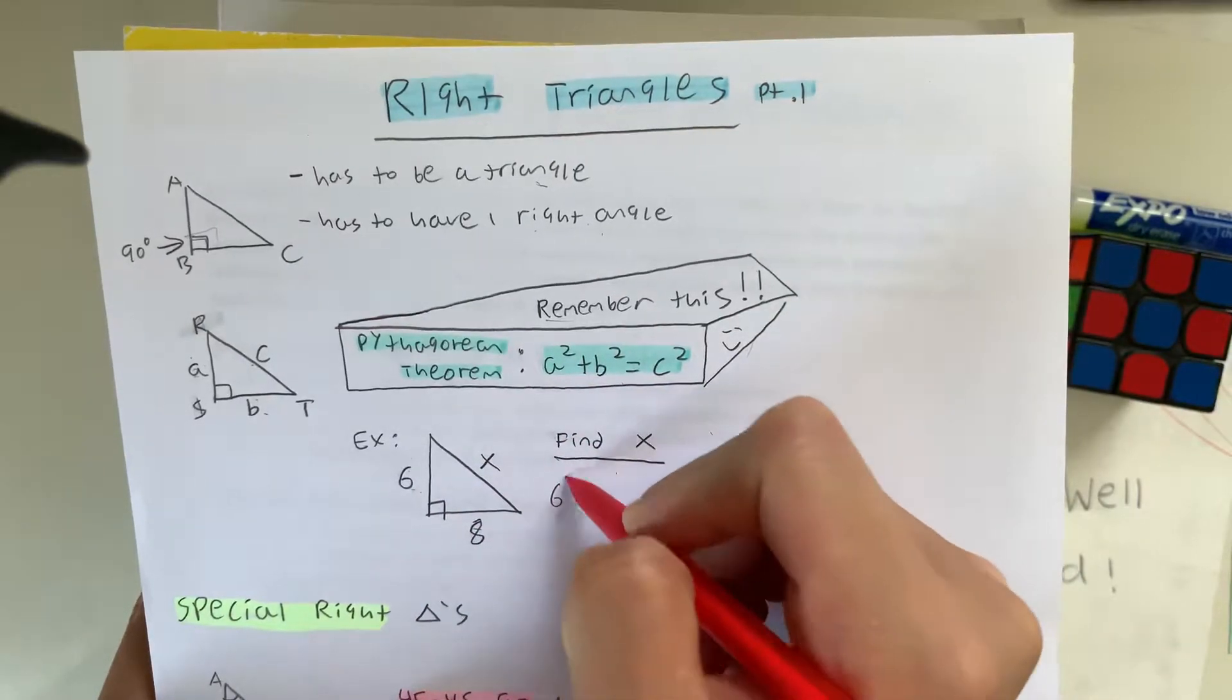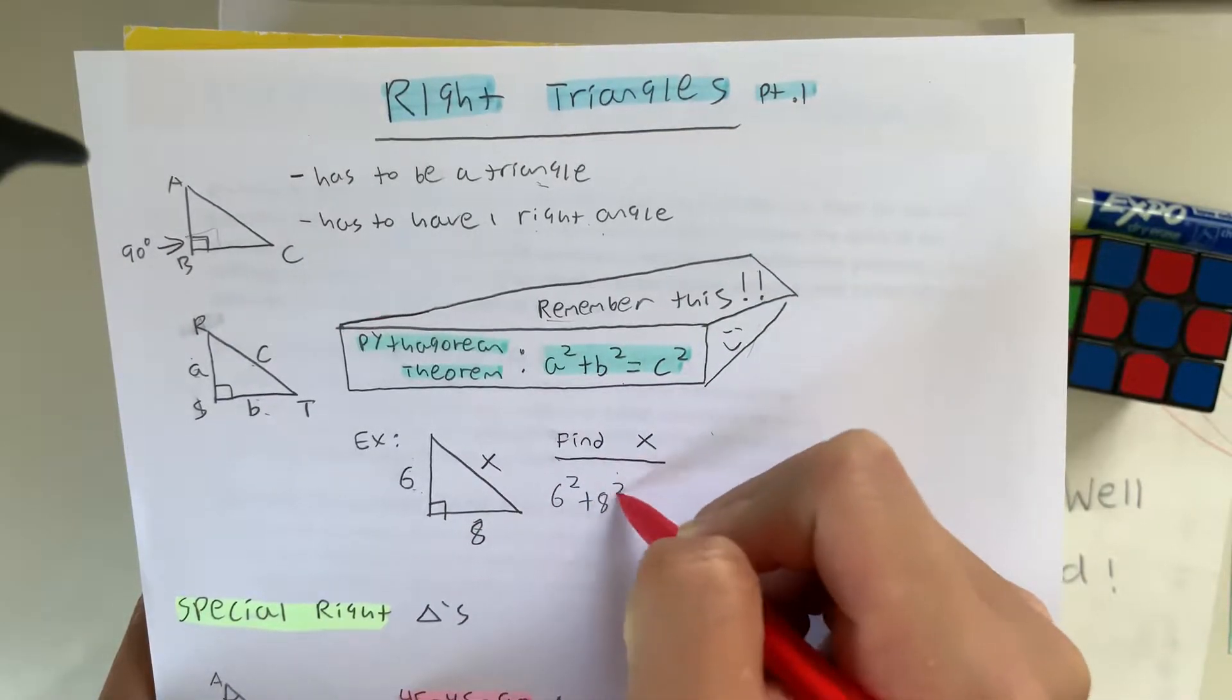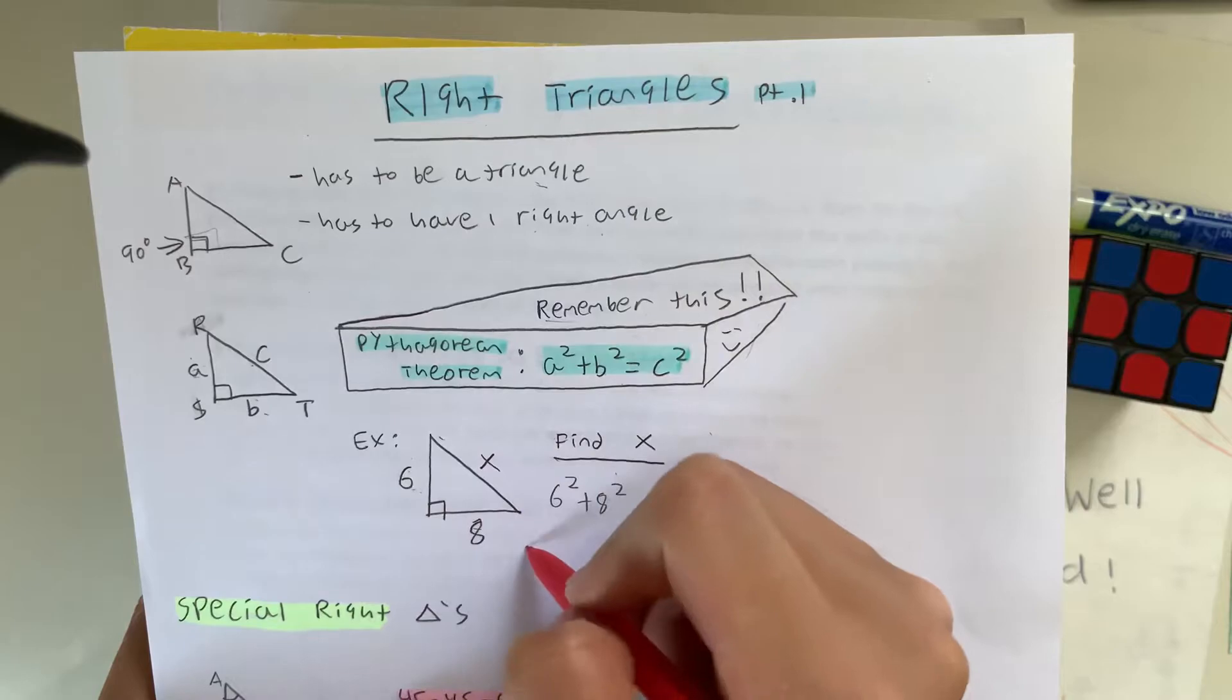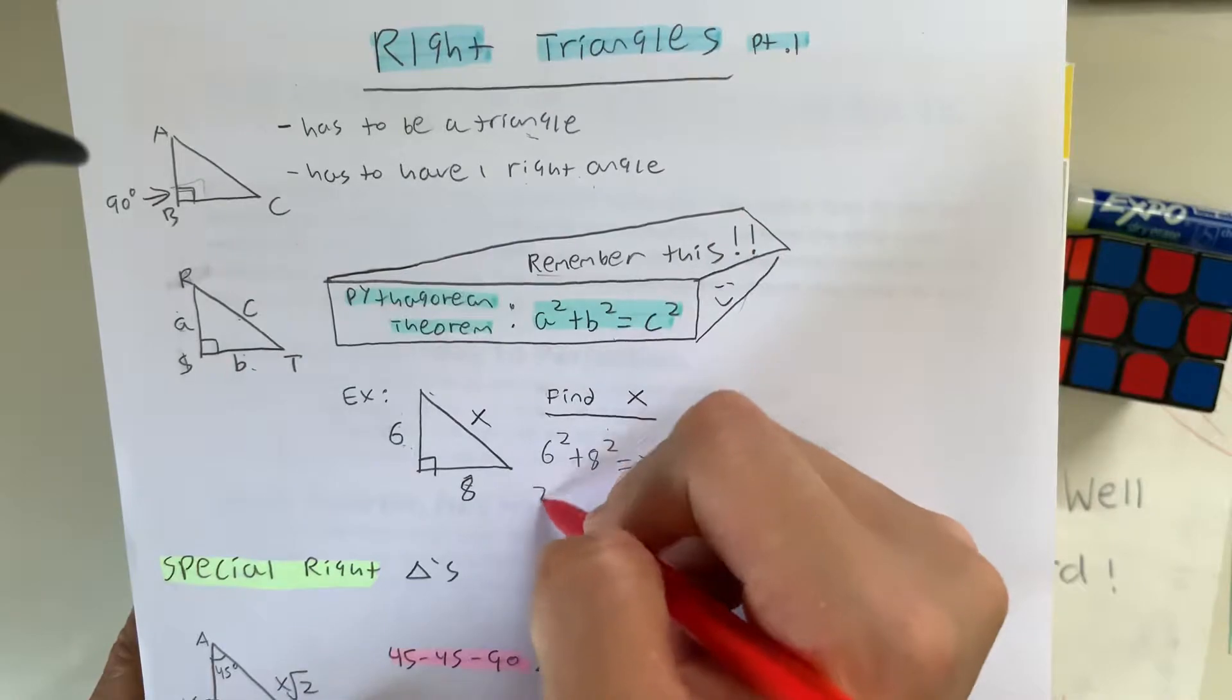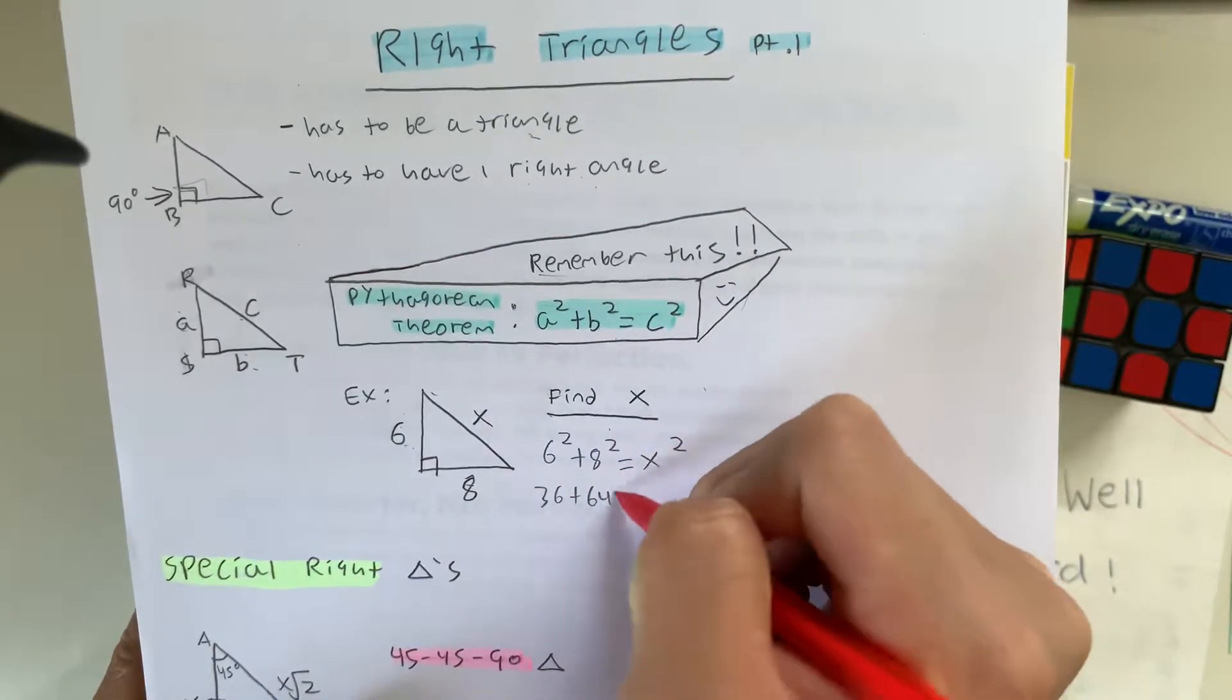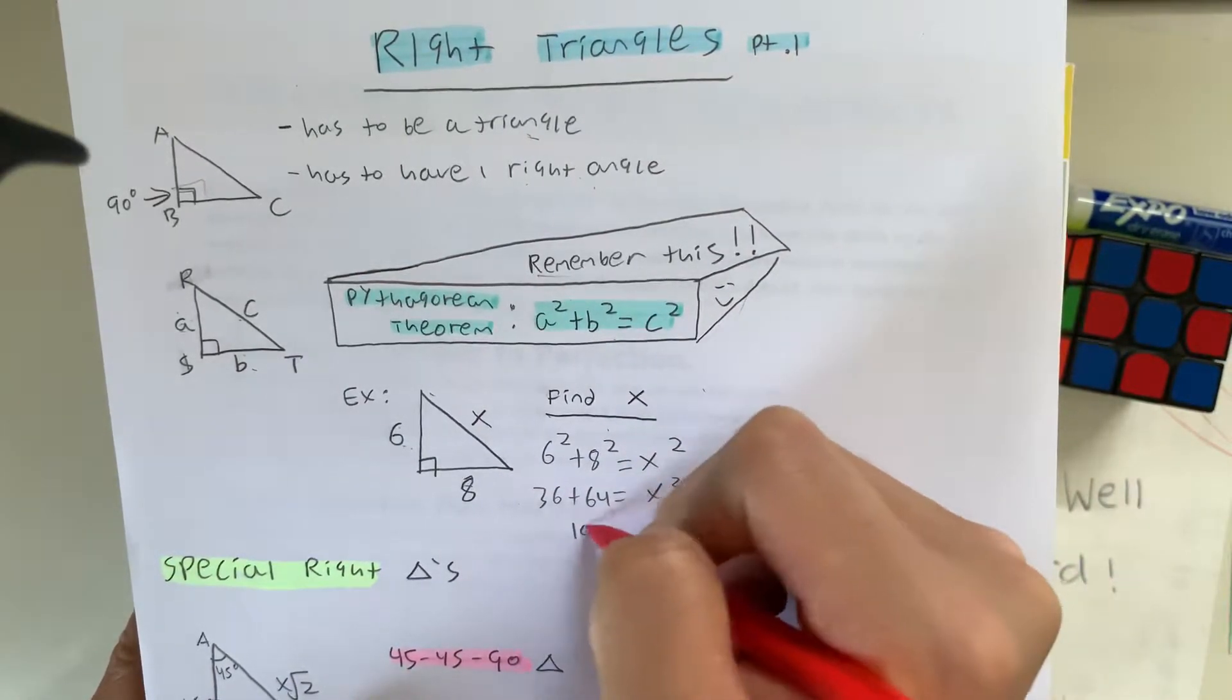So 6 squared plus 8 squared is equal to the length of the hypotenuse, which is equal to x squared. So we can just solve this, giving us 36 plus 64 is equal to x squared. So 100 is equal to x squared.